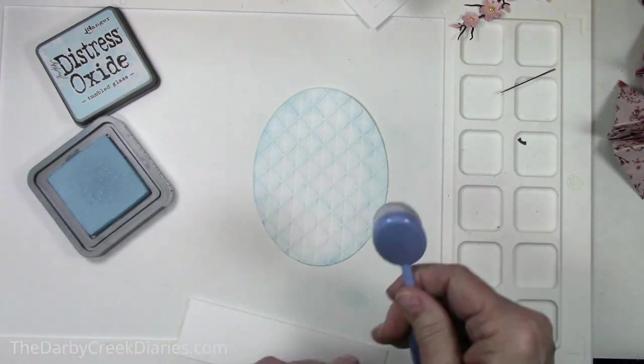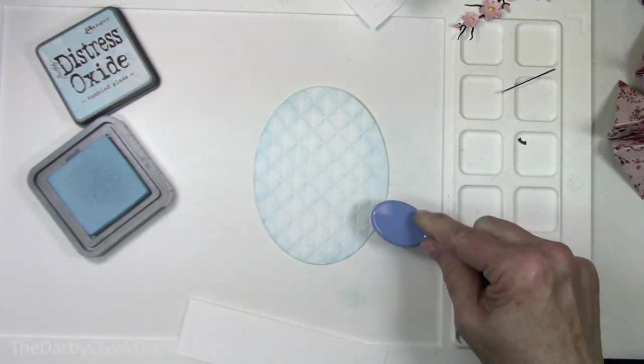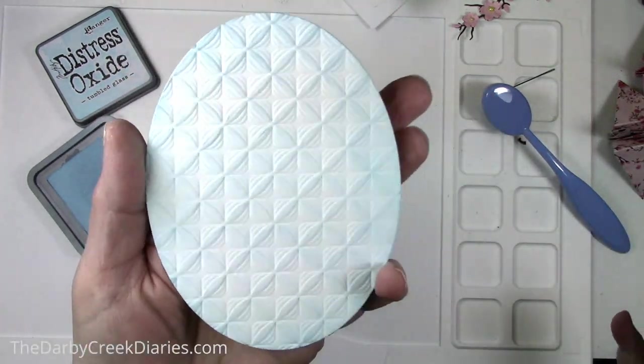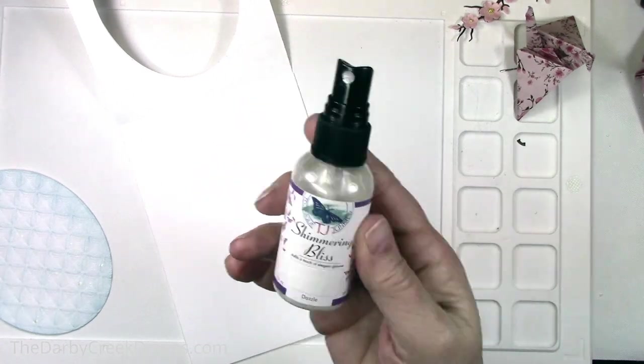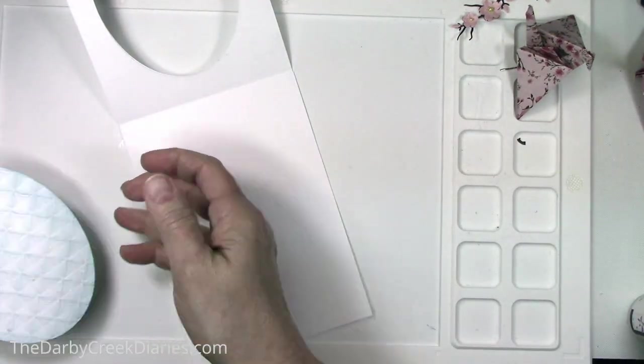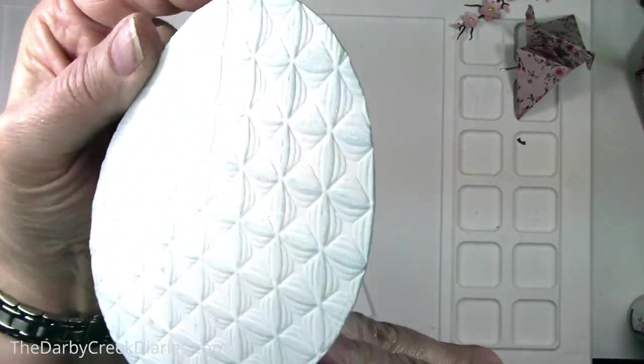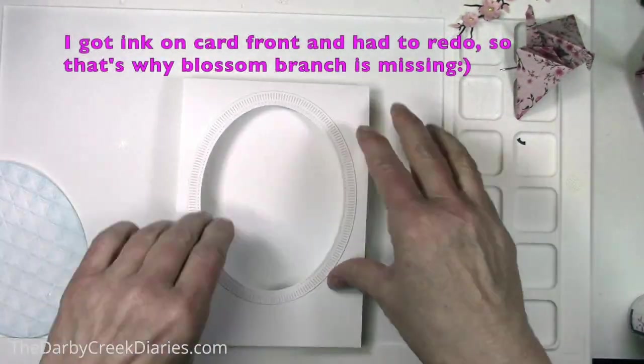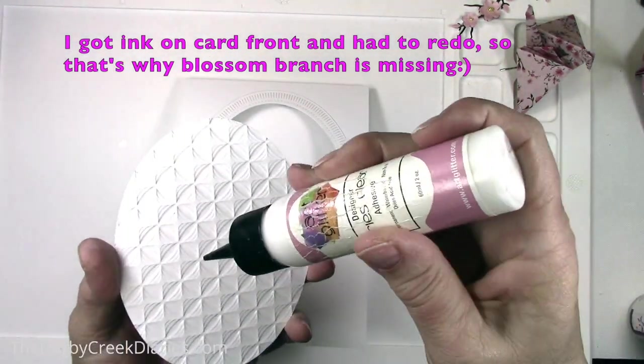And I'm putting some tumbled glass distress oxide on lightly. I'm making it darker around the edges and trying not to get a blob anywhere. But that's what it looks like. It's pretty subtle. Then I use some shimmering bliss. But I'll find you something else for the supplies because I can't find it. But it's just a little bit of sparkly stuff.